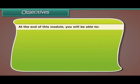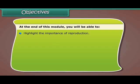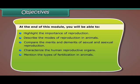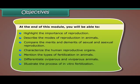At the end of this lesson, you'll be able to: highlight the importance of reproduction; describe the modes of reproduction in animals; compare the merits and demerits of sexual and asexual reproduction; characterize the human reproductive organs; mention the types of fertilization in animals; differentiate oviparous and viviparous animals; and illustrate the process of in vitro fertilization and cloning.